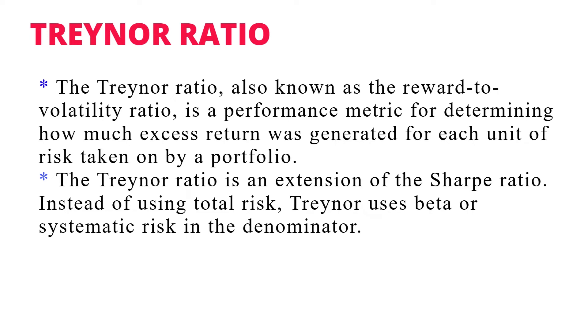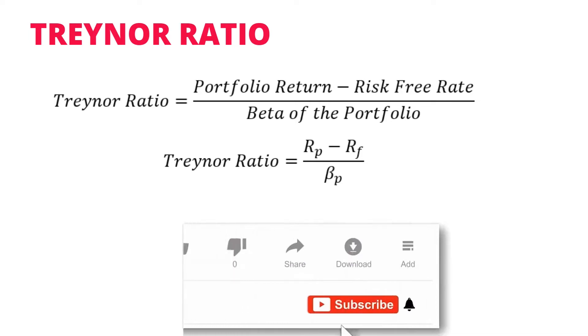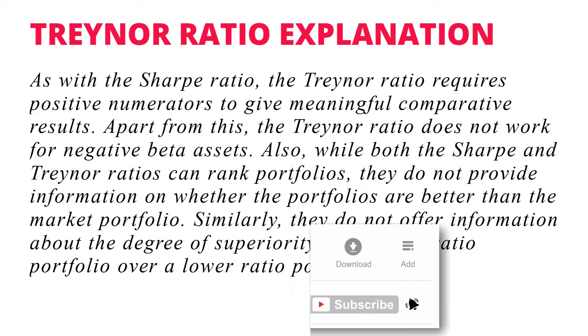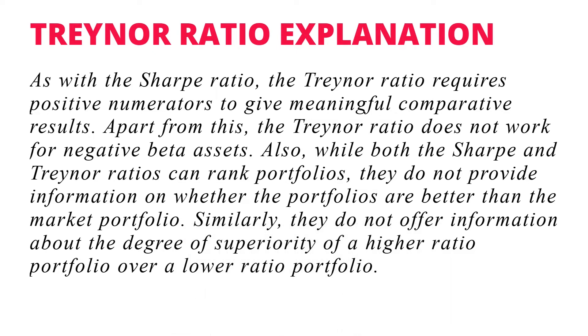The next ratio is the Treynor Ratio. The Treynor Ratio, also known as the reward-to-volatility ratio, is a performance metric for determining how much excess return was generated for each unit of risk taken on by a portfolio. The Treynor Ratio is an excess extension of the Sharpe Ratio — instead of using total risk, the Treynor Ratio uses beta, or the systematic risk, in the denominator. The Treynor Ratio equals portfolio return minus the risk-free rate of return, divided by the beta of the portfolio. As with the Sharpe Ratio, the Treynor Ratio requires a positive numerator to give meaningful comparative results. While both the Sharpe Ratio and Treynor Ratio can rank portfolios, they do not provide information on whether the portfolios are better than the market portfolio.